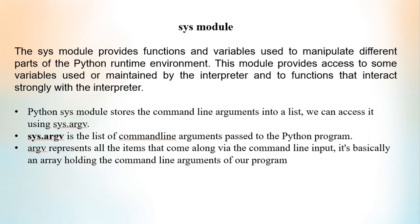The Python Sys module stores the command line arguments into a list. What do you mean by argv and argc? You are very familiar with argv and argc in C language. argv is an array that stores the command line arguments, and argc is the integer variable that stores the count of the command line arguments.